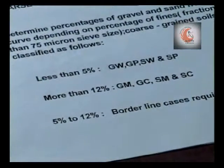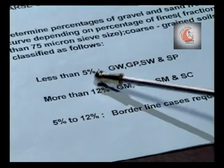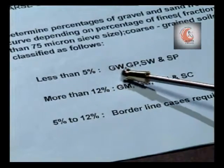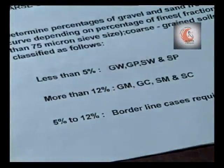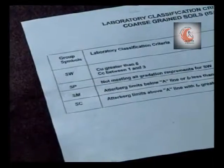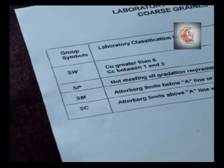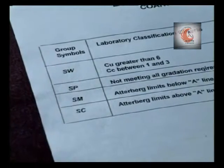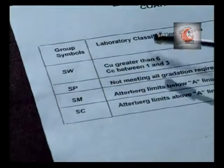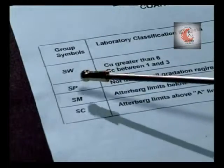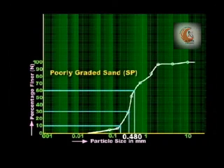In our case, the percentage of fines is less than 5%, so classification falls in the GW/GP/SW/SP group. Cu is 2.82 and Cc is 1.18, which does not meet the requirement for SW, so the classification of this soil is SP — poorly graded sand.